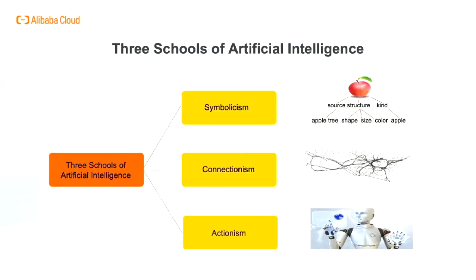The research and development of artificial intelligence has a history of many years. During this period, scholars from different disciplines or academic backgrounds have made their own understanding of artificial intelligence and put forward different views, resulting in different academic schools. During this period, symbolism, connectionism, and actionism had a great influence on the research of AI.